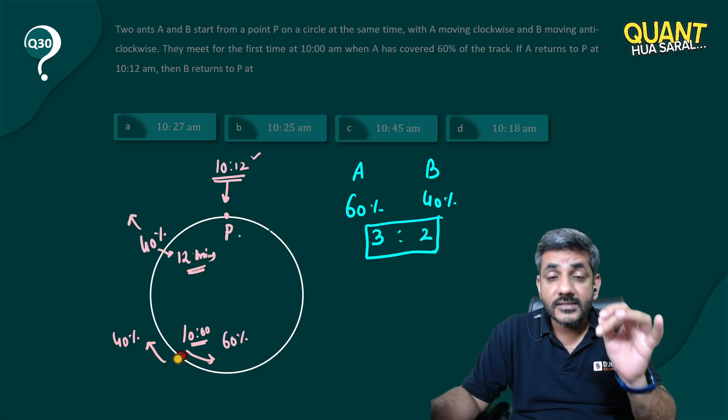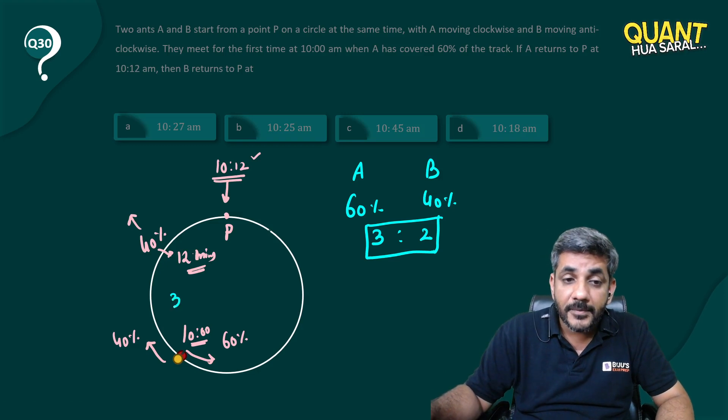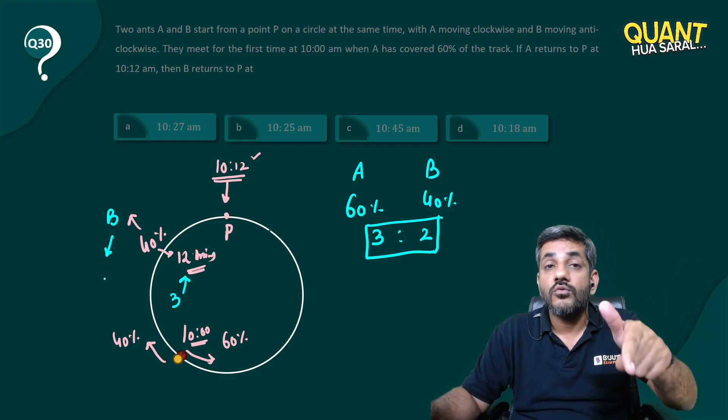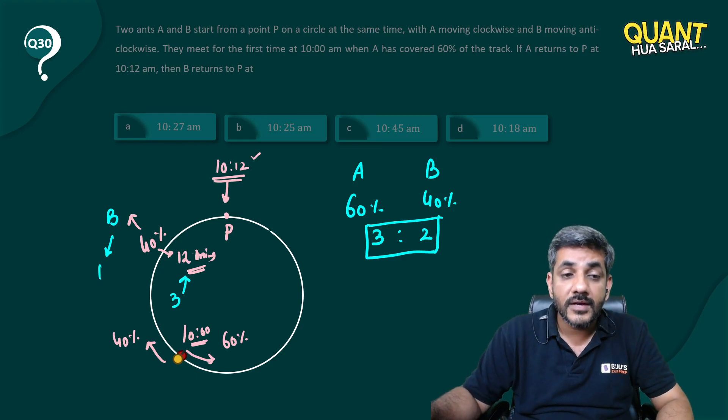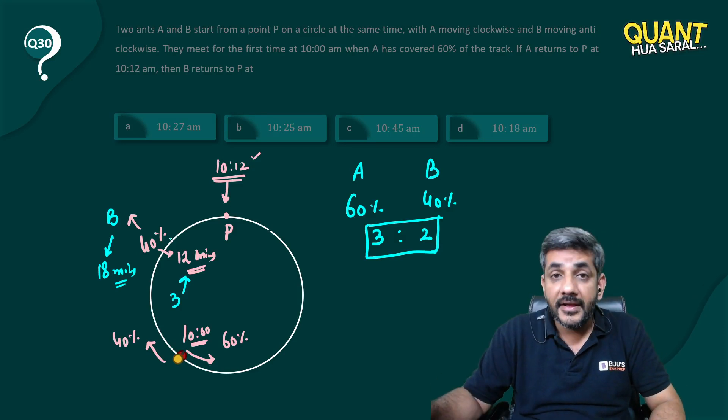Speed of A is 3, speed of B is 2. So if the person with speed of 3 covers a distance in 12 minutes, the person with speed of 2 would have covered it in how many minutes? He would have covered it in 3 by 2 of 12. 3 by 2 of 12 equals 18 minutes. So ant B would have covered that 40% of the distance in 18 minutes.